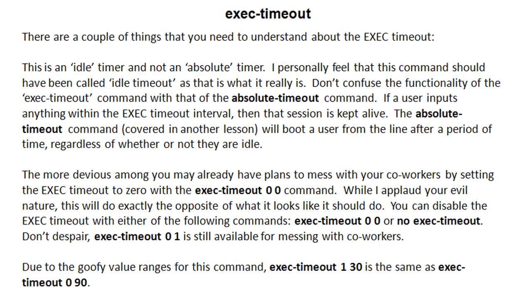There's a goofy time range for this command. You'd think the minutes argument goes from 0 to some upper limit and seconds from 0 through 59, but the seconds field actually accepts a much higher number. This means you can configure the same timeout with two different inputs — exec timeout 1 30 is the same as exec timeout 0 90, because there are 90 seconds in 1 minute and 30 seconds. Keep that in mind, especially for Cisco certification exams where this could be a trick question.